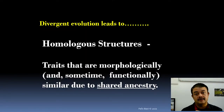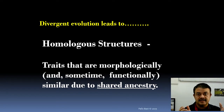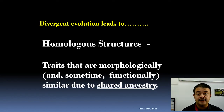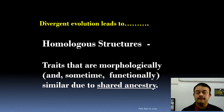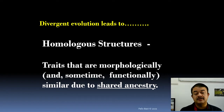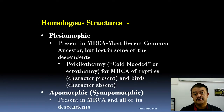Divergent evolution leads to homologous structures. Divergent is real evolution — one lineage splitting into two, one species changing into two or more via speciation — the origin of species. Traits that are morphologically and functionally similar due to shared ancestry: in biology, relationship is only because of shared ancestry. Trusting morphological similarity alone is not a real biological relationship. Homologous structures from divergent evolution can be plesiomorphic or apomorphic.